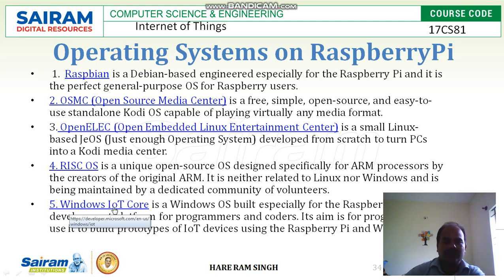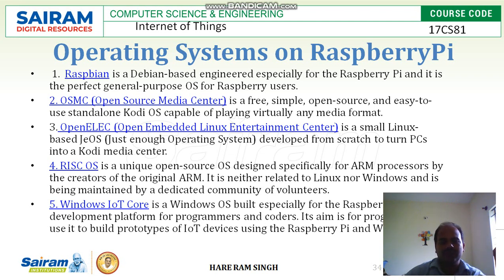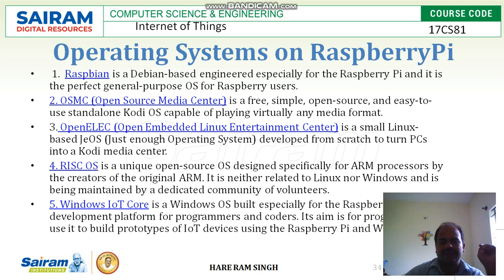The fifth operating system that can run on Raspberry Pi is Windows IoT Core. It is a Windows operating system built specially for Raspberry Pi as a development platform for programmers and coders. Its aim is for programmers to build prototypes of IoT devices using Raspberry Pi and Windows 10.